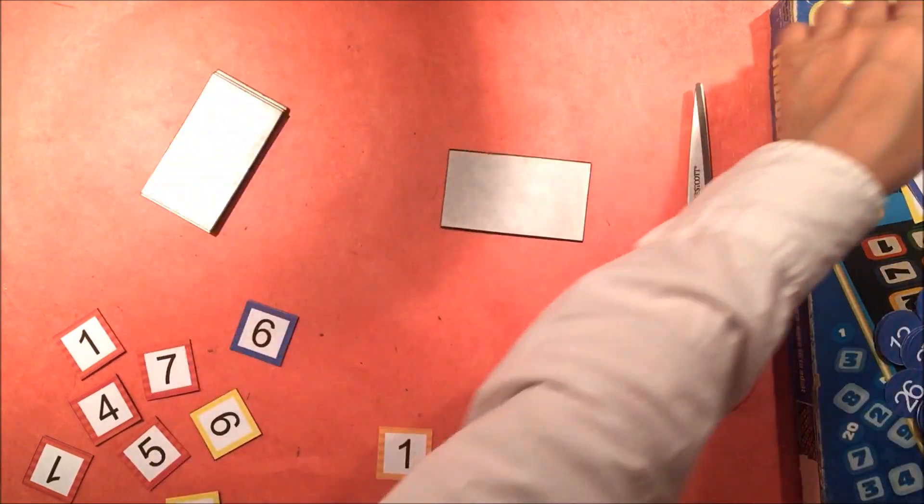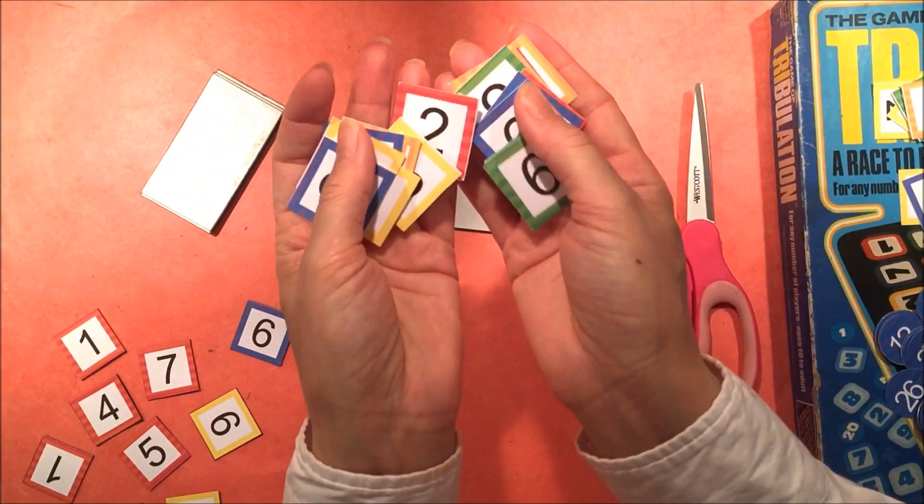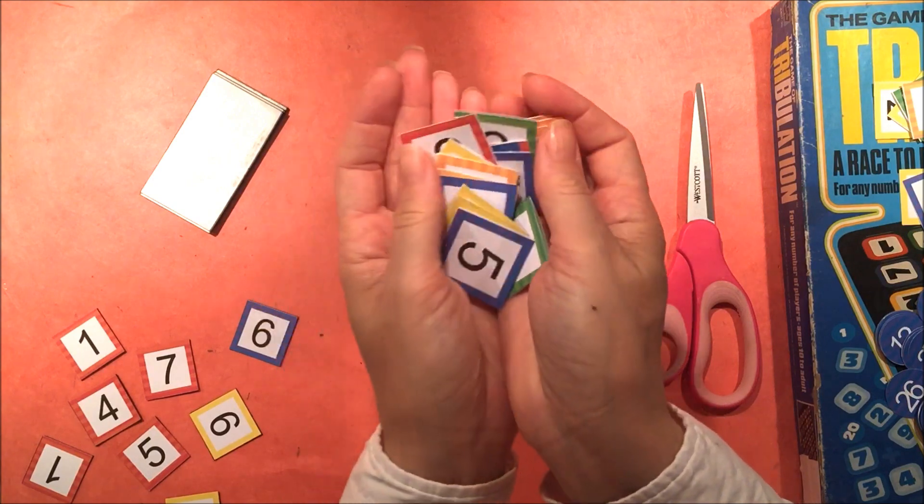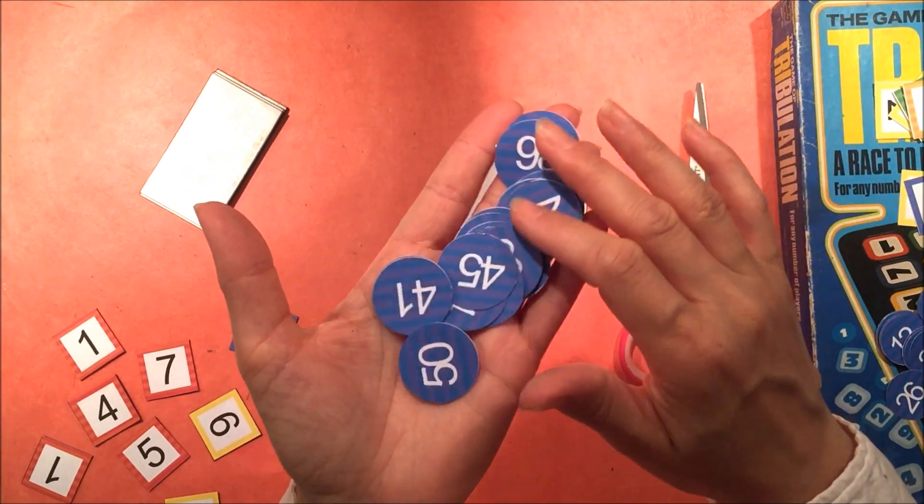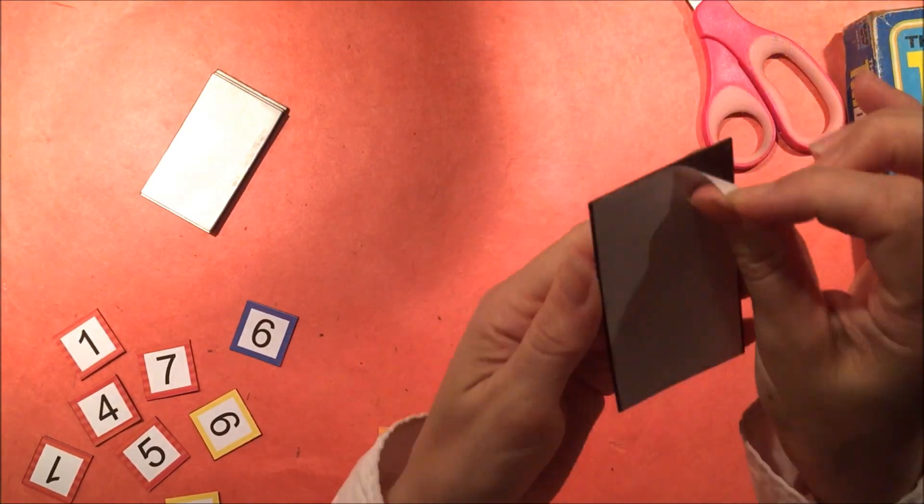So I'm using some magnetic sheets that have adhesive on one side in order to adhere down my tiles to something that's going to have a bit more, it's going to make it a bit more sturdy.